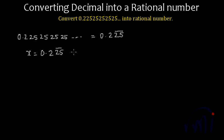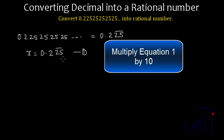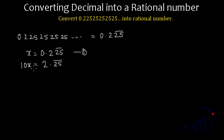I'll multiply this equation number 1 by 10 and if I multiply by 10, I'll get 10x is equal to 2.25 where this 0.25 is repeating itself infinite times. Let me call it as equation number 2.